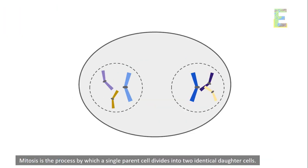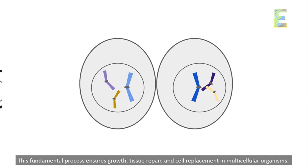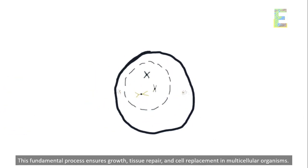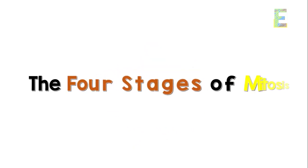Mitosis is the process by which a single parent cell divides into two identical daughter cells. This fundamental process ensures growth, tissue repair, and cell replacement in multicellular organisms. The four stages of mitosis.